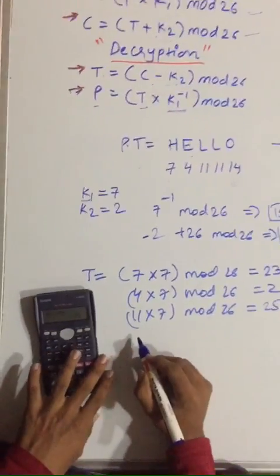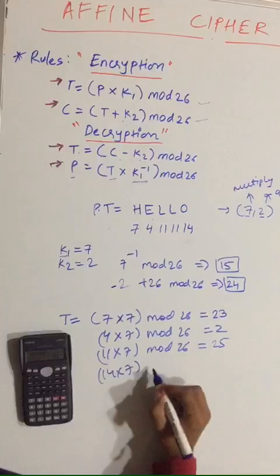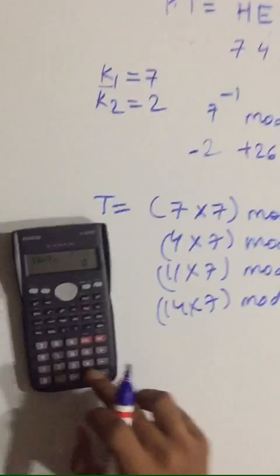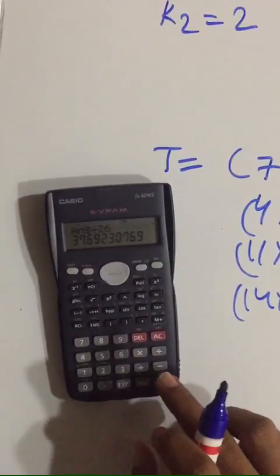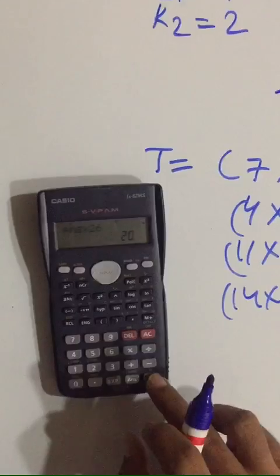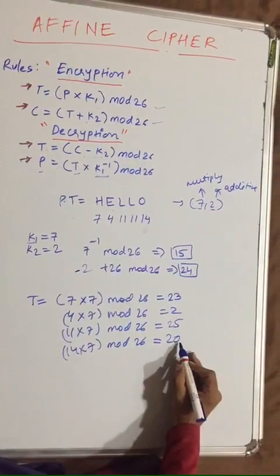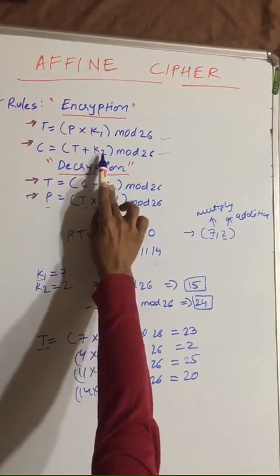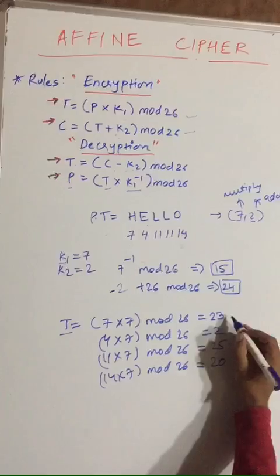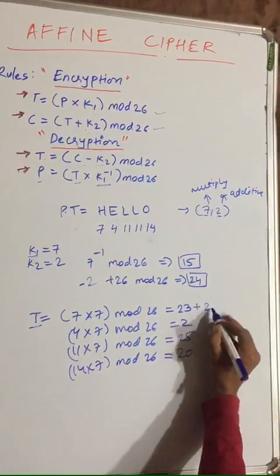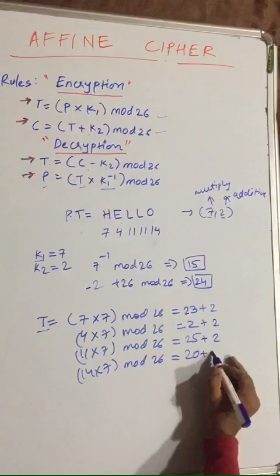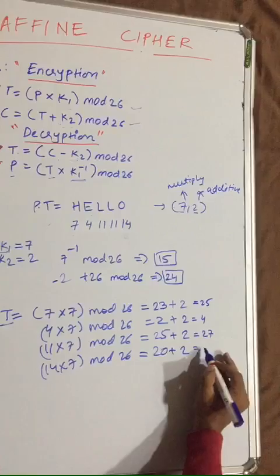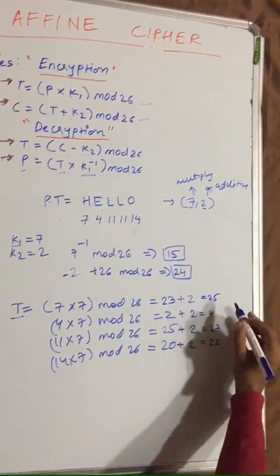Then for 14 times 7 mod 26, 14 times 7 is 20. Now you have found T values. Just add T plus key 2 mod 26, so inside also just write and add with 2. This will be 25, 4, 27, 22.